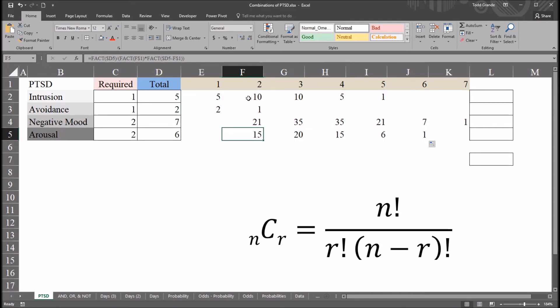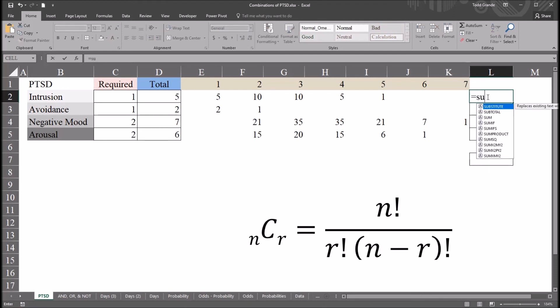So now we need to take the sum for each category. So over here in cell L2, the equal sign, sum, and then I'm going to select all these so I can auto fill down. It won't hurt anything if these cells are empty. So we have 31. So there's 31 possible combinations of just intrusion, just the intrusion category. And because I set this up correctly, I can just auto fill this down, and I get 3 for avoidance, 120 for negative mood, and 57 for arousal. So these are all the combinations for each category.